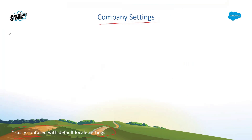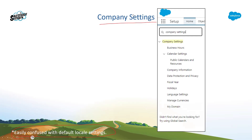Now, looking at the hierarchy — company settings are easily confused with default locale settings. Which one is first? Company settings. Then what? Company information. So we have company settings, then company information, and once you click on company information, then we see our default locale.